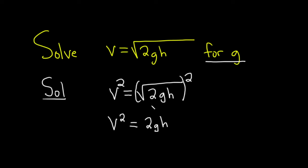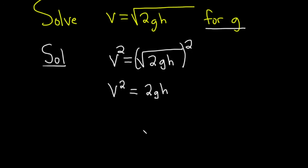Okay, here's the key step. We're looking for little g. So we have to get rid of the 2, and we have to get rid of the h. And little g is being multiplied by both of these. So we just have to divide by those things.